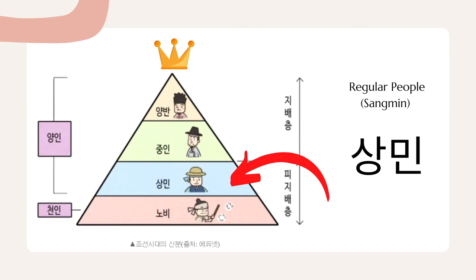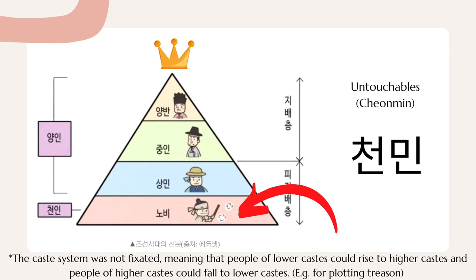Below the Joongin was a class called Sangmin. These guys were regular people ranging from artisans, merchants, and mostly farmers. They had to pay a lot of taxes to the government and were prone to being drafted into the army, with a lot of restrictions on the type of jobs they could have. Below the regular people was the Chunmin, often translated as untouchables. These people belonged to the Yangban or Joongin as property and were largely made up of slaves, shamans, butchers, and jesters.